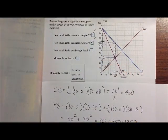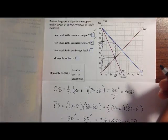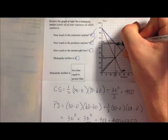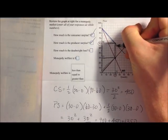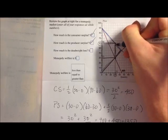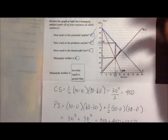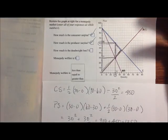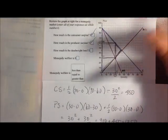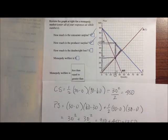Next we want to know how much is the deadweight loss. And our deadweight loss is always given by this triangle over here. It's the difference between what welfare would have been in a perfectly competitive market and what welfare is in this not perfectly competitive market, in this monopolized market.